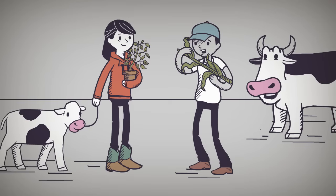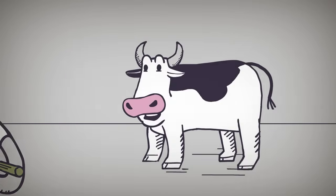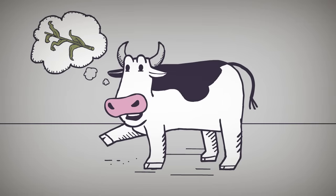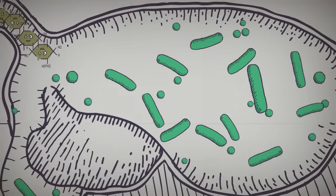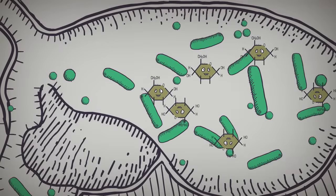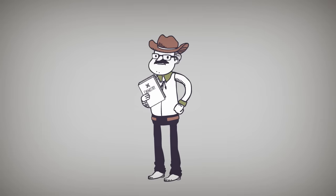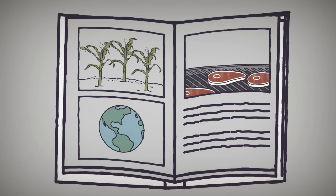Beta glucose bonds are so strong that humans can't digest them, so even if we could chew corn stalk, we wouldn't get many nutrients from it. Fortunately for cows, bacteria in their digestive tract help make the nutrients available by breaking the strong cellulose bonds. This is why chemistry is such a valuable tool for agriculture.